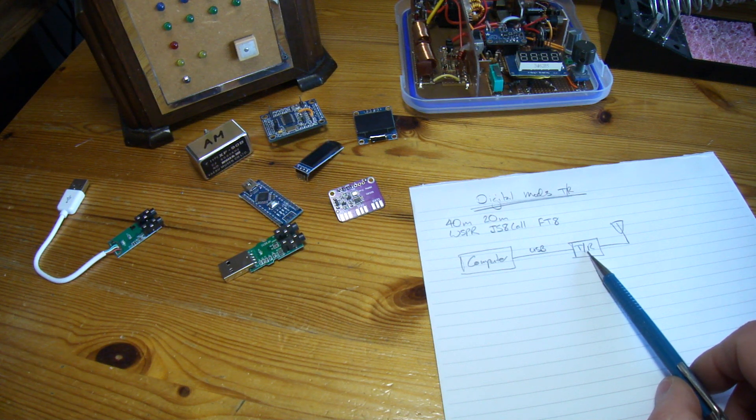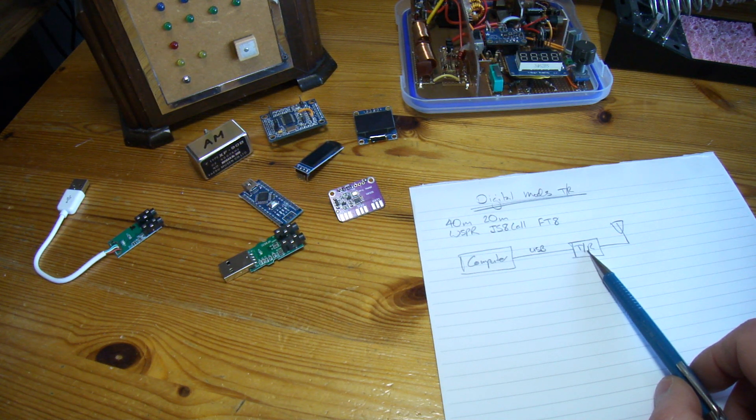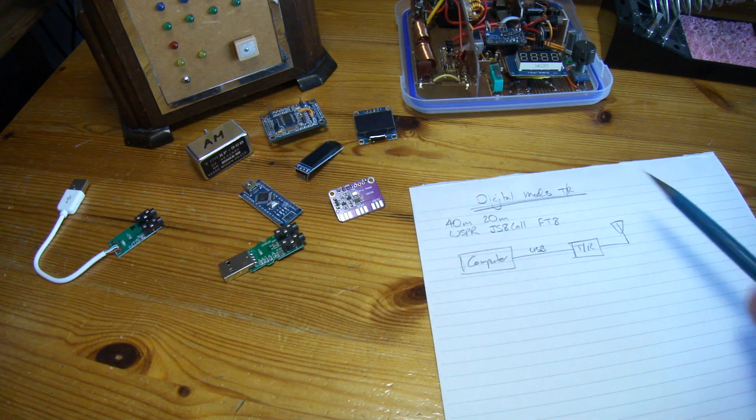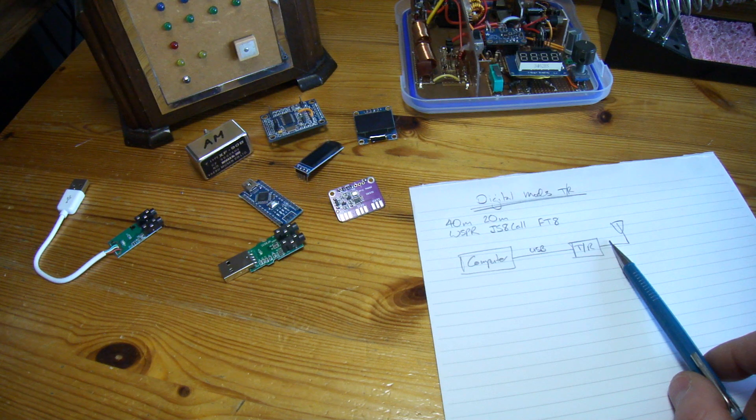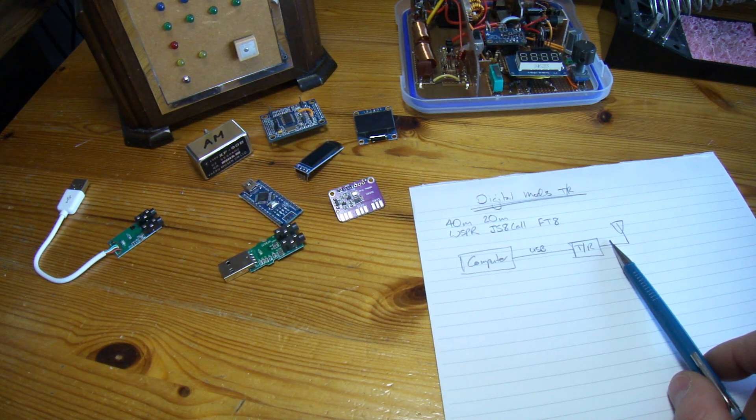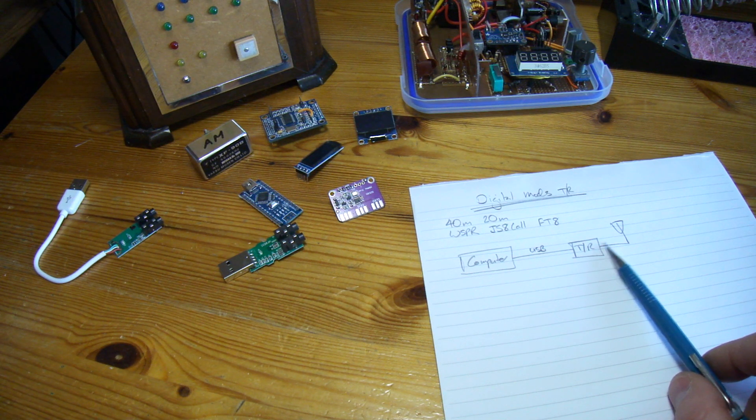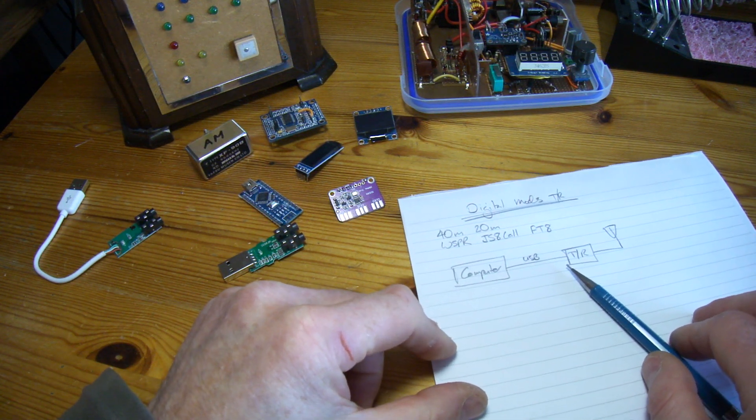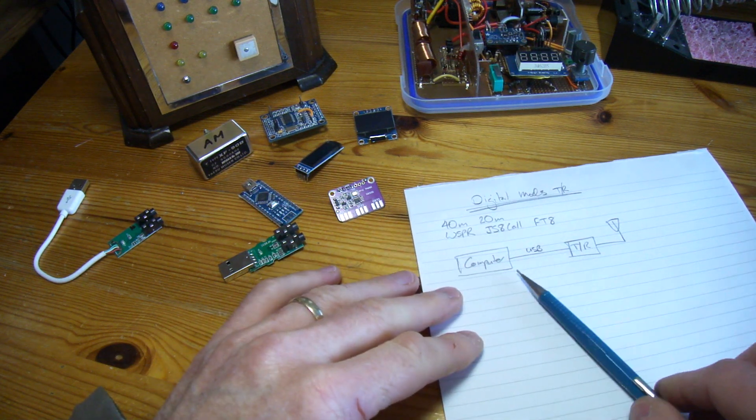There are some very good examples of digital modes transceivers out there, the ADX-SX, the QDX are a couple of good examples. I'm not trying to emulate those, I'm just trying to build a simple little transceiver that I haven't done before, should be quite interesting. Again, nice and simple, that's going to be the aim. As I've said many times, the whole idea of these videos is to try and encourage others to give homebrew a go. So that's my philosophy.